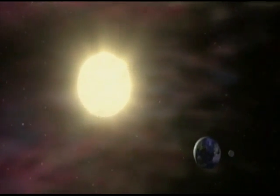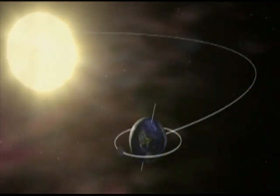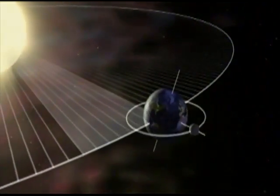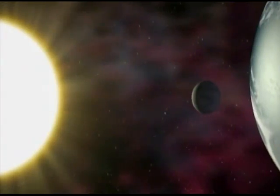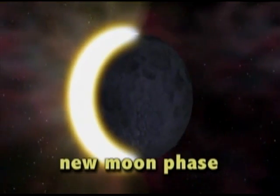A total eclipse of the sun is one of the most awe-inspiring sights in all of nature, and it's all made possible due to the unique geometry in the distances and sizes of the sun and moon as seen from the Earth. As we all know, the moon orbits the Earth and the Earth orbits the sun. And celestial mechanics allows us to calculate these orbits with great precision. When the moon passes between the Earth and the sun, we say that the moon is in the new phase.